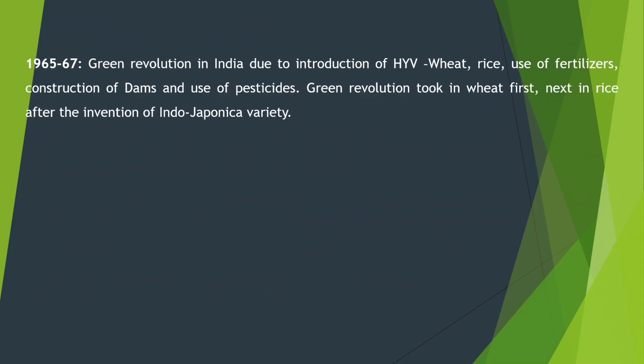Green revolution in India came due to the introduction of HYV wheat and rice, use of fertilizers, construction of dams, and use of pesticides. Green revolution started first with wheat and then rice. The new variety of rice introduced was the Indo-Japanese variety.